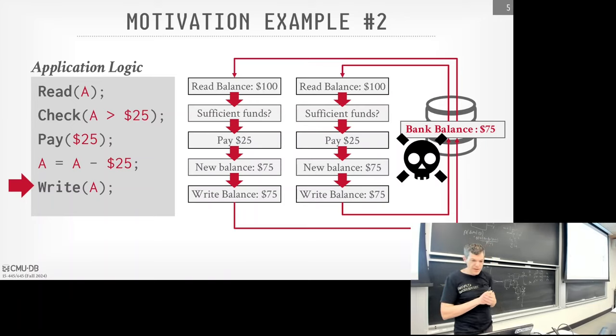What if before any transaction starts, we take the entire database file and make a complete copy of it, have the transaction operate on that copy, and when it's done flip a pointer so that copy becomes the new version? If the transaction fails, we just ignore the modified copy. This is correct and avoids the update problem. However, the amount of parallelism is basically zero.